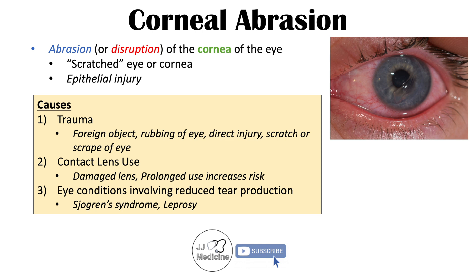Certain eye conditions can also increase the likelihood of corneal abrasions, especially those involving reduced tear production. In a condition like Sjögren's syndrome with dry eyes, tears normally help moisten and lubricate the cornea. With reduced or absent tear production, the cornea becomes dried out and more at risk for damage. This can also be seen in severe or prolonged dehydration, and in conditions like leprosy as well.